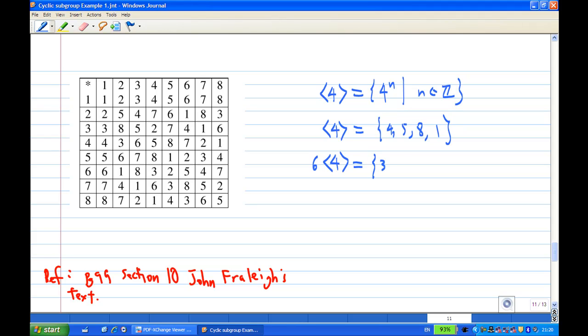Then 6 times 5 is 2, then 6 times 8 is 7, then 6 times 1 is 6. There are only two cosets. The other cosets you'll find are just repetition of these two, since I have exhausted all the elements of G. In this case, G over the cyclic subgroup generated by 4 consists of the cyclic subgroup generated by 4 and the coset 6H.